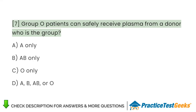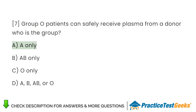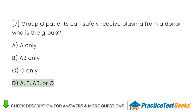Group O patients can safely receive plasma from a donor who is group: A. A only. B. A and B only. C. O only. D. A, B, or O.